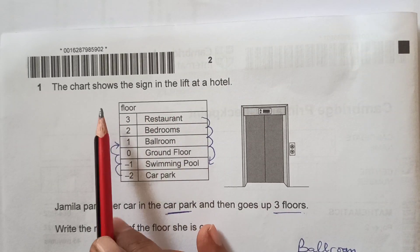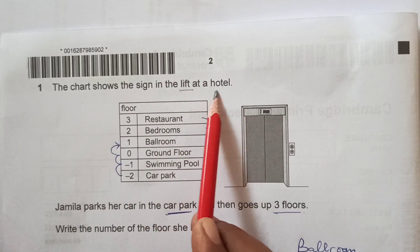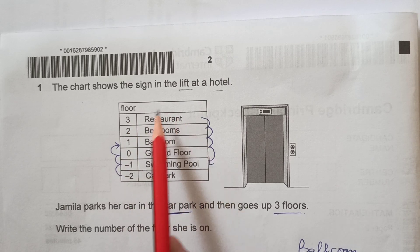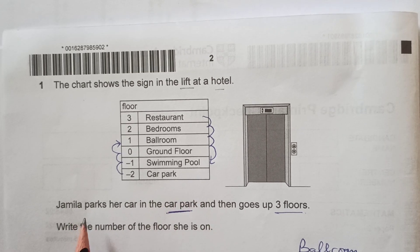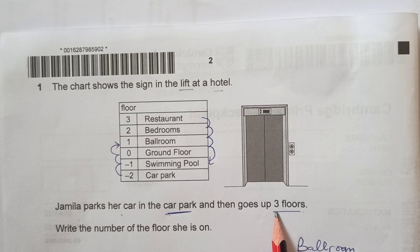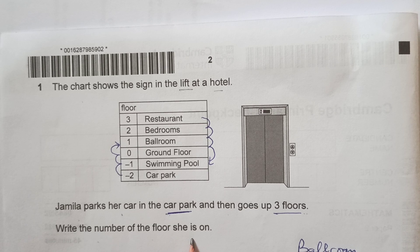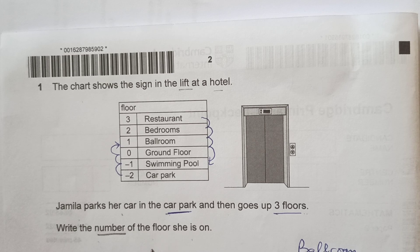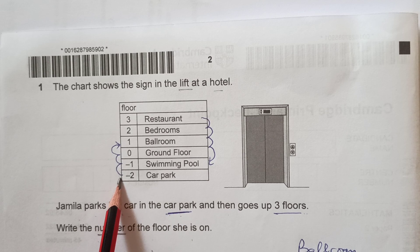Question 1: The chart shows the sign in the lift at a hotel. We have floors here, 3, 2, 1, 0 and these are the names of the floors of the lift where the lift goes. Jamila parks her car in the car park and then goes up 3 floors.